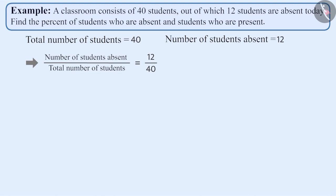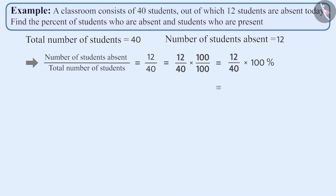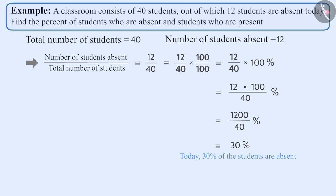To express it in percent we have to convert the denominator of the fraction to 100. For this we will multiply the fraction 12 by 40 with 100 and divide it by 100, so that the value of the fraction does not change. 12 by 40 equals 12 by 40 into 100 by 100, which equals 12 by 40 into 100 percent, which equals 1200 by 40 percent, which equals 30 percent. Therefore 30 percent of the students are absent in the classroom today.